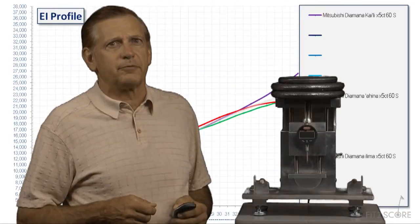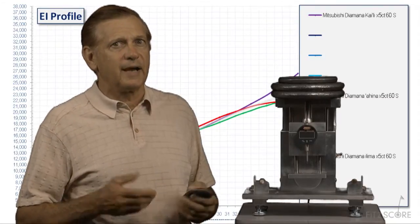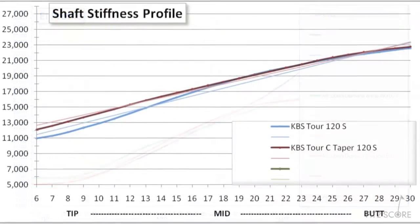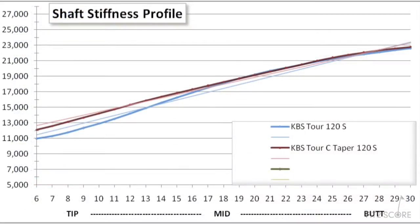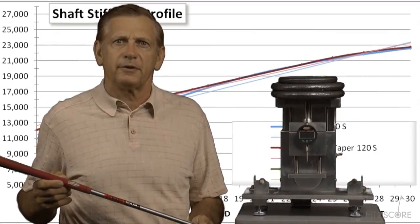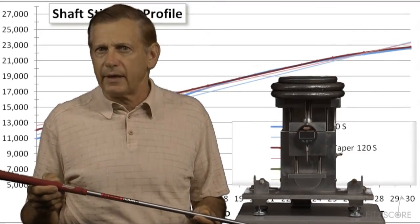From a club maker's perspective, what's the use of knowing shaft bend profiles? Actually, the question becomes: how can you fit without them? Let's take a look at some KBS iron shafts. The red line is the new C-Taper; the blue line is the KBS Tour. We can clearly see that the new design has a stiffer tip section. This will create the lower trajectory, lower spin flight sought by better players. We know this before we go into a fitting. The EI profiles and accumulated experience predict what we can expect. Of course, each golfer is different — what works with one golfer may not work with another.